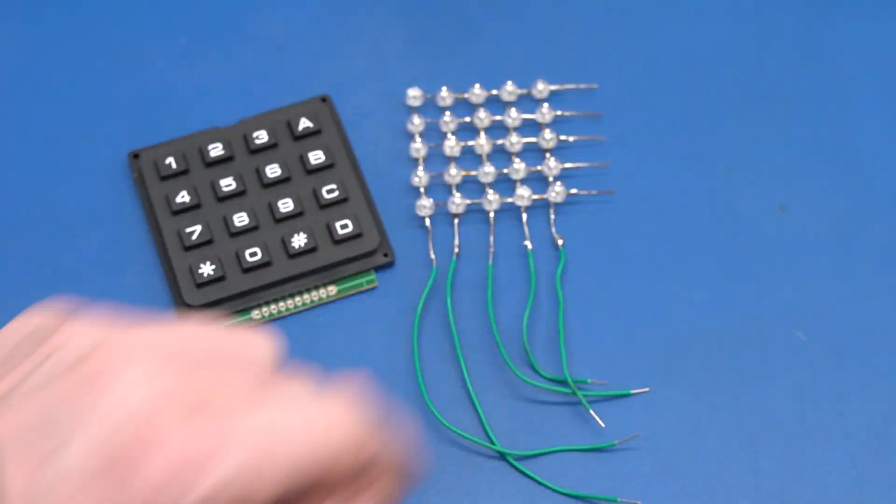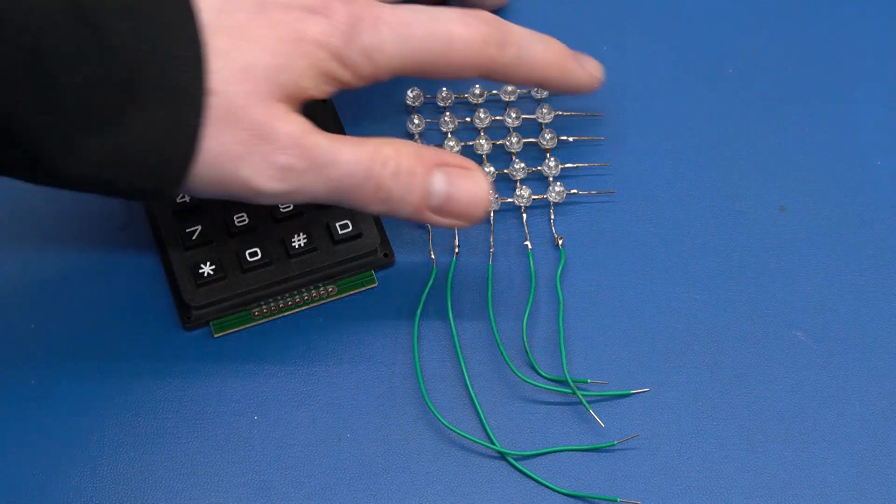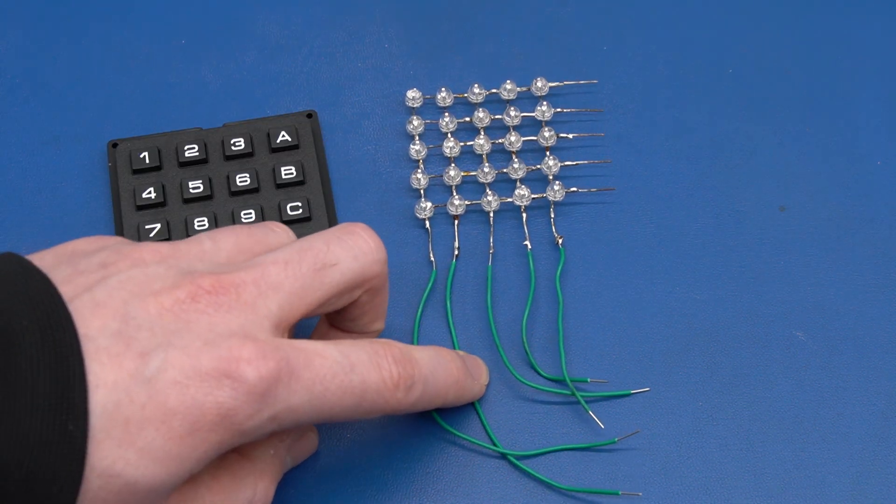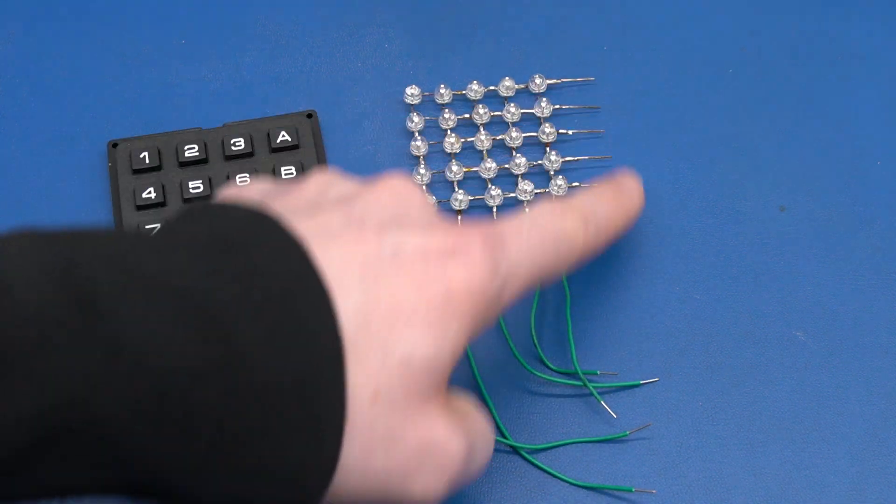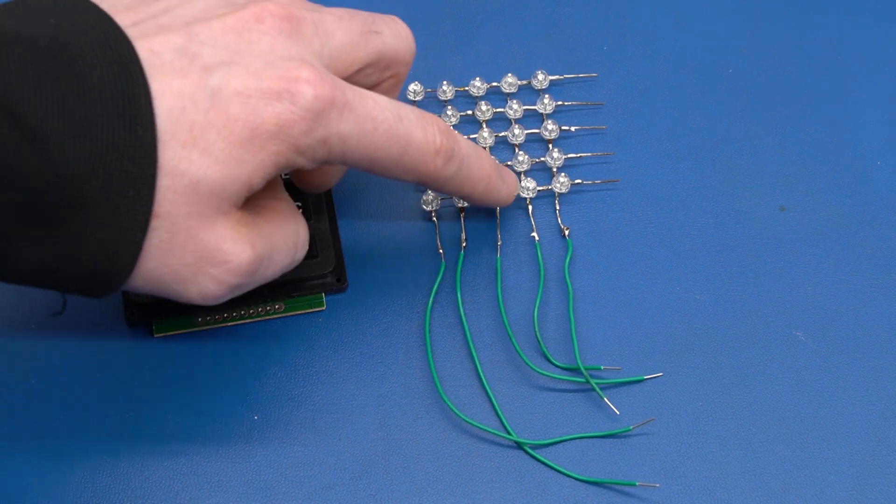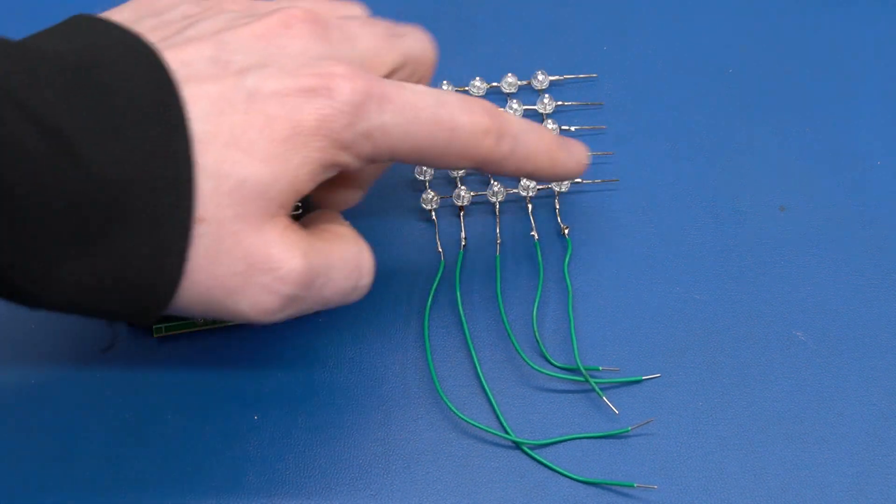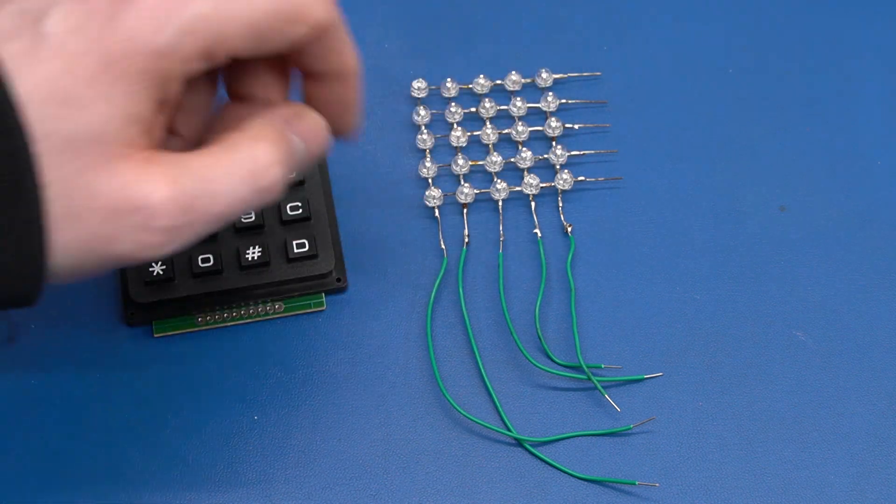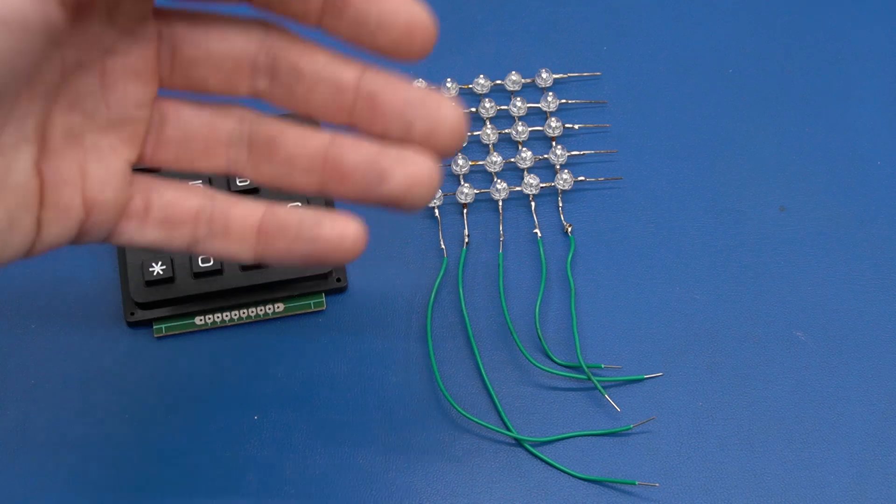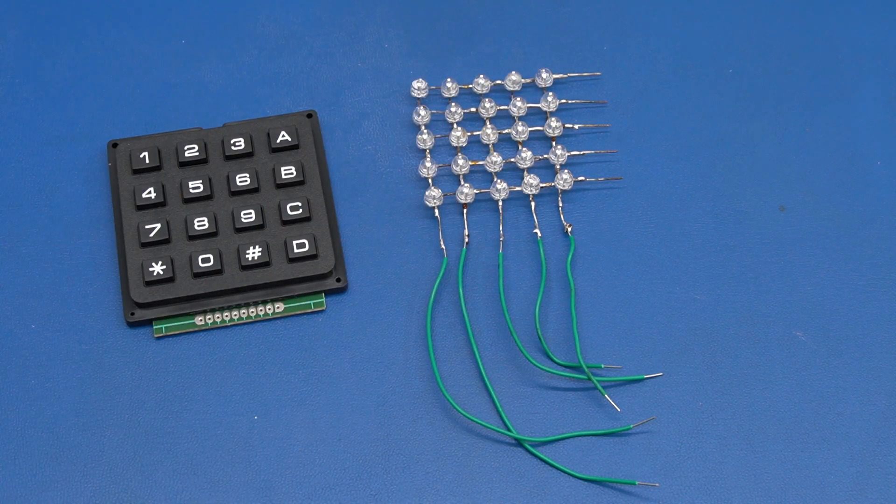When we multiplex an LED matrix, we apply voltage to one of the columns here and we can ground the row that we want to light up. Then we switch it off and switch to the next one and we ground those LEDs that we want to light up in that column and so on. And we do this really fast so that the human eye cannot notice when they are on or off.